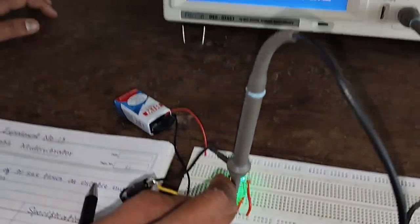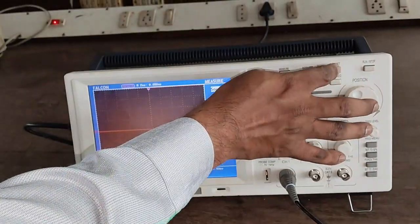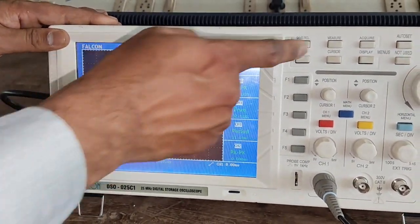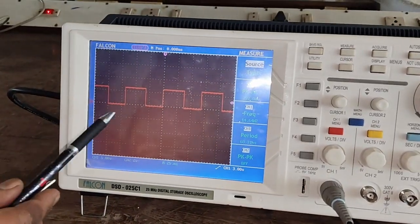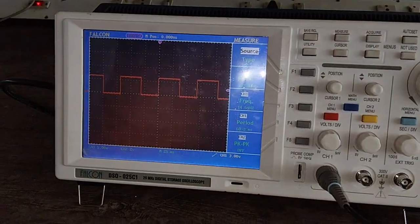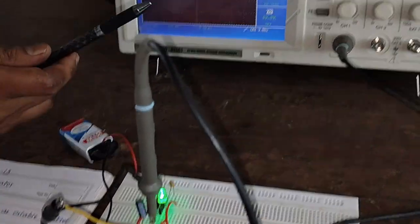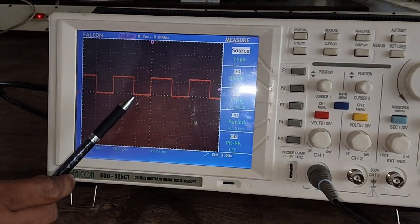Now press the auto set button on DSO, and also press the measure button on the DSO. So here we can see that since the LED is blinking, it is blinking because of the square wave waveform which is obtaining at pin number 3.